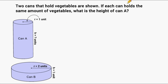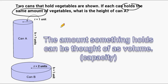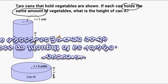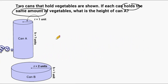The problem says that each can holds the same amount of vegetables. Now in math, when you think about something that holds something, we are talking about volume. And because we're dealing with cans, we're dealing with cylinders. So right away we should be thinking about the volume of cylinders. And because they hold the same amount of vegetables, we can say that the volume of each of those cans are equal to each other.